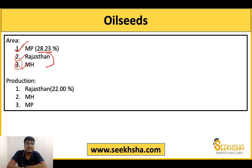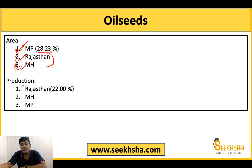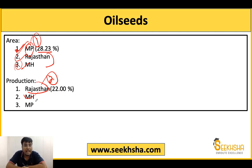Do not assume that if a state has more area, it will also have more production — that is not always true. This depends on yield and irrigation. Your total production depends on many factors. A state may have more area but not necessarily more production or yield. Here, MP is number one in area, but for production, Rajasthan comes first with 22%, followed by Maharashtra in 2nd, and MP drops to 3rd place in production.